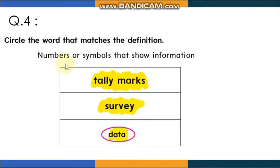Question 4: Circle the word that matches the definition. 'Numbers are symbols that show information' — it's not tally marks, it's not a survey, it's data. We use data to show information. A survey is when you ask people the same question about something.